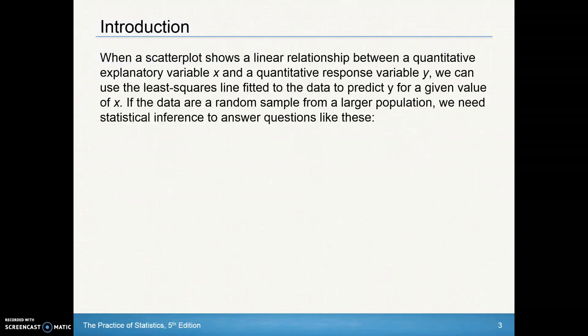When a scatterplot shows a linear relationship between a quantitative explanatory variable x and a quantitative response variable y, we can use the least squares line fitted to the data to predict y for a given value of x. We plot data, find that line of best fit, and we can use that line, y equals a plus bx, to help us predict values. So if I've got a certain x value, I can use that line to predict what my y value is. If the data are a random sample from a larger population, we need statistical inference to answer questions like these.